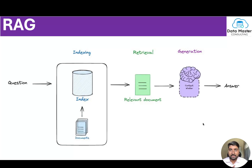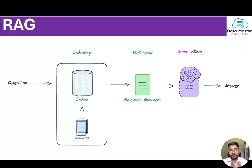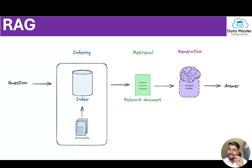This is where the RAG architecture comes into picture. RAG takes all your documents — structured, semi-structured, and unstructured data. As you can see in the image, you have all the documents and we try to chunk them into smaller pieces. We then store them in a database — but not a normal database. It's a vector database, which stores data in a numerical form. We take the chunks, convert them to embeddings, and store them in the vector database.